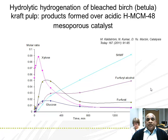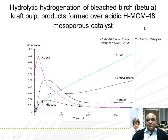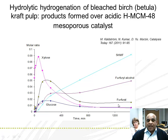What we find is that the transformation of this birch Betula pulp takes place over MCM-48. We see that xylose, 5-hydroxymethylfurfural (HMF), furfural, furfuryl alcohol, glucose, and furfural are formed.